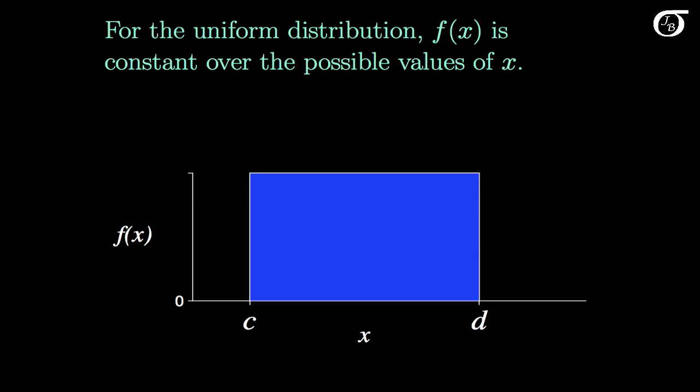For the uniform distribution, the probability density function f is constant over the possible values of x. Here I'm calling c the minimum value x can take on, and d the maximum value x can take on. c and d are allowed to be any finite values.